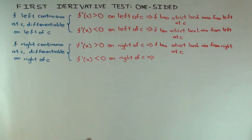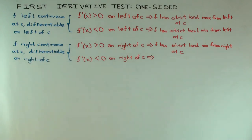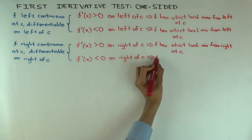What can you say about the last case? If f prime of x is less than 0 on the right, the function is decreasing on the immediate right. Since it's continuous at the point, you can extend that decreasing behavior — so the function is going down from the point. Therefore it's a strict local maximum from the right.